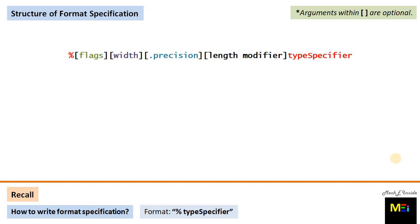Let's start with the structure of format specification. This is the complete structure of the format specification part of the control string. Recall how we wrote format specifications previously — that compulsory requirement is shown here. In the syntax, necessary arguments are shown in red font, while all other arguments shown within square brackets are optional. If you insert values into optional arguments it gives enhanced or desired output; otherwise it gives output with default format parameters as we were getting previously.